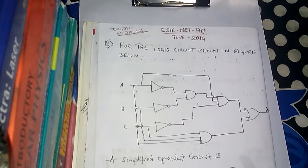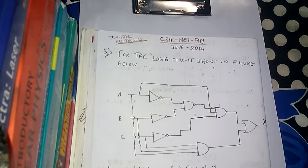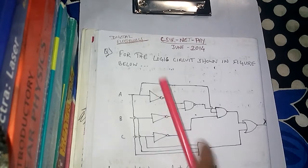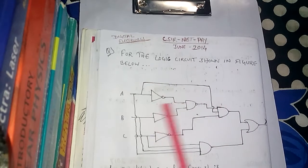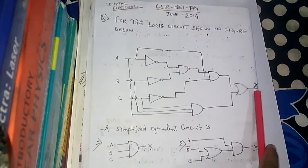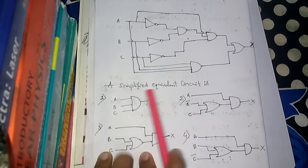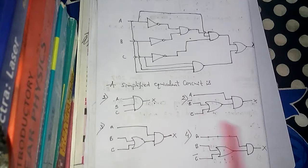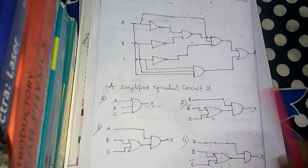Hey friends, this is Vidhan, welcome to my channel. Today we have a problem from digital electronics from June 2014. It says for the logic circuit shown in the figure below, where X is the final output, a simplified equivalent circuit is which one?